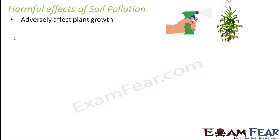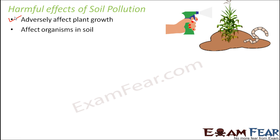Some of the harmful effects of soil pollution are: first, it adversely affects plant growth. When the soil is poisonous, plants growing on that soil will not have good growth because they get their water, minerals, and nutrients from the soil — so if the soil contains poison, everything the plant takes will also contain poison. Second, it affects organisms in the soil. Many organisms live in soil, and if the soil contains poison, these organisms will consume that poison, which can cause their death and spoil the entire soil ecosystem.